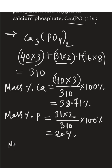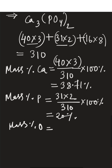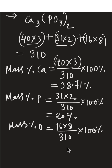Similarly, the mass percentage of oxygen is calculated as: the total mass of oxygen, which is 16 × 8, divided by the total molar mass of 310, multiplied by 100%. The mass percentage of oxygen equals 41.29%. So like this, you can calculate the mass percentage of every atom present in a molecule.